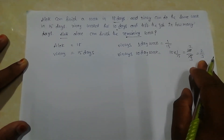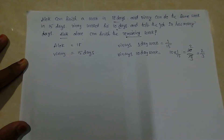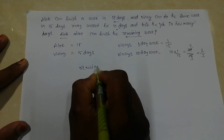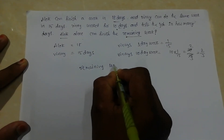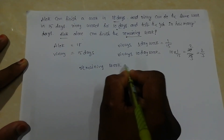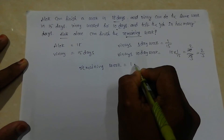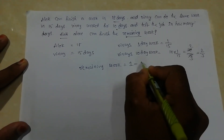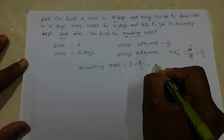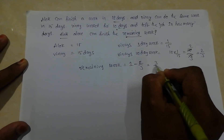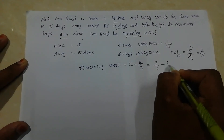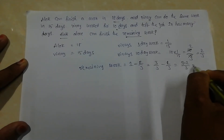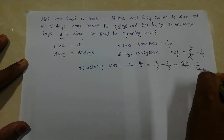Now we find the remaining work. Suppose total work is 1. From the total work, subtract the 2/3 Vinay completed: 1 − 2/3 = 3/3 − 2/3 = 1/3. So the remaining work is 1/3.